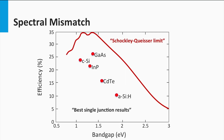Therefore, the Shockley-Queisser efficiency limit is most valid for direct band gap materials like gallium arsenide. As discussed in the previous block, due to its direct band gap, radiative recombination is the limiting recombination mechanism for the open-circuit voltage of gallium arsenide.